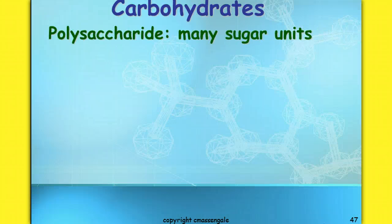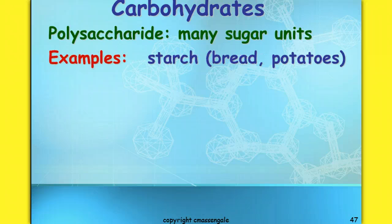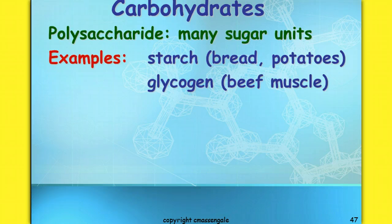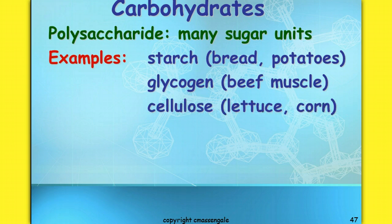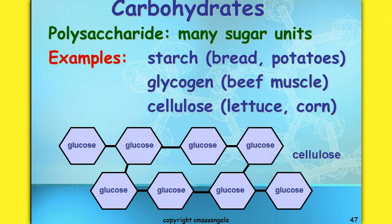A polysaccharide means many sugar units put together. Examples include starches like breads and potatoes, and glycogen — found in beef muscle, so when you eat a steak or hamburger you're eating glycogen. There's also cellulose, which is found in the cell walls of all plant material. When you eat lettuce or corn on the cob, you're taking in cellulose, an arrangement of glucose molecules all combined together making a polysaccharide.